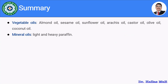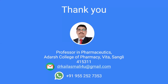In this session, we discussed fixed oils more specifically — vegetable oils like almond oil, sesame oil, sunflower oil, arachis oil, castor oil, olive oil, and coconut oil, and mineral oils like light and heavy liquid paraffin. Thank you very much.